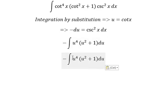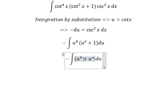So we have negative integral of u⁴ times (u² + 1) du. U⁴ multiply with u² gives u⁶, and u⁴ multiply with 1 gives u⁴.